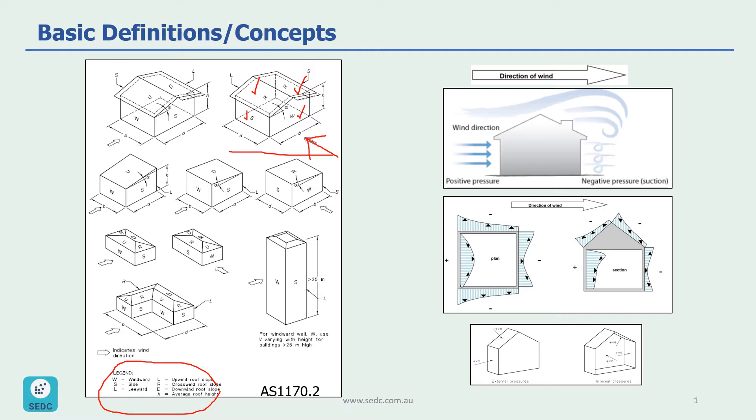For the roof, we might have three different legends depending on the direction of the wind and the slope of the roof. In this specific case, both sides of the roofs are called crosswind roof slope.